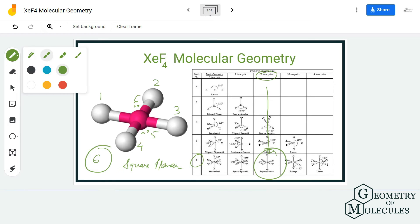The AXN notation for XeF4 will be AX4N2. As there are four fluorine atoms forming bonds with xenon, it would be X4. And for N2, it is because of the fact that there are two lone pairs present on the xenon atom.